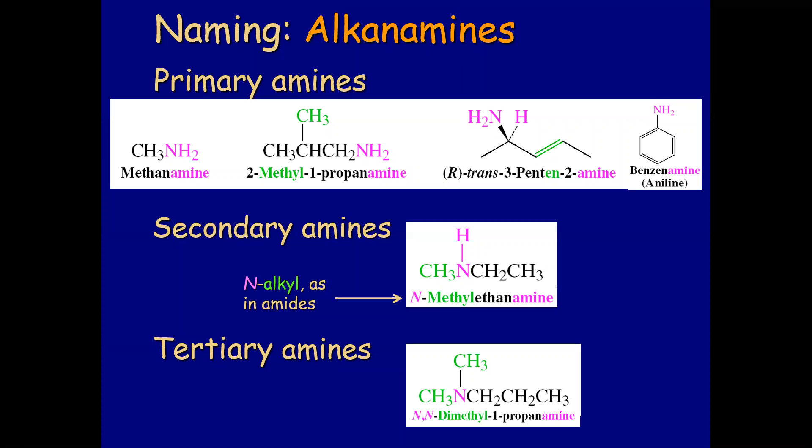For a tertiary amine, for example, this would be N,N-dimethyl-1-propanamine. It's the same system, but you have two groups on the nitrogen, which means you need to write N,N to indicate that there are two groups on the nitrogen.